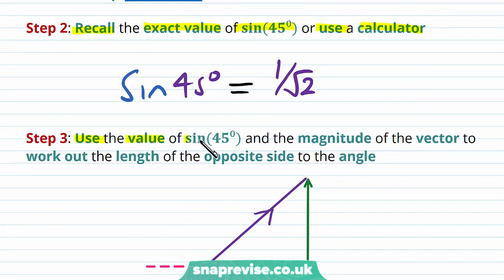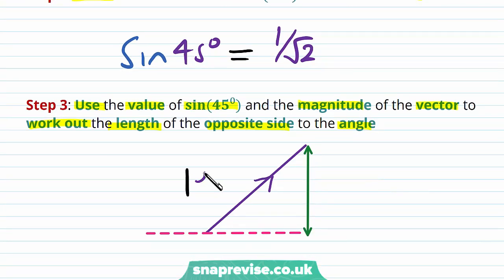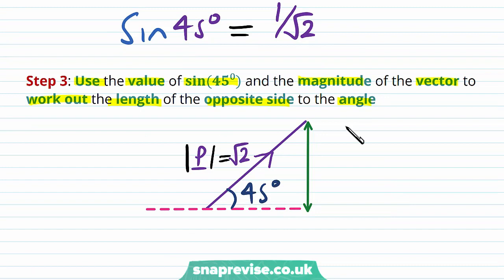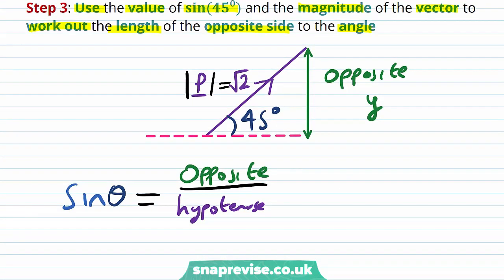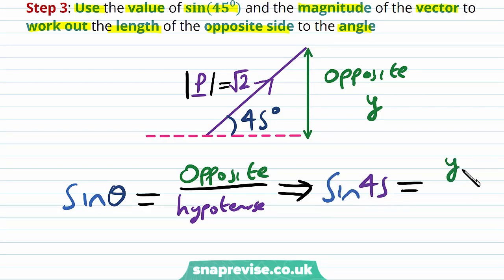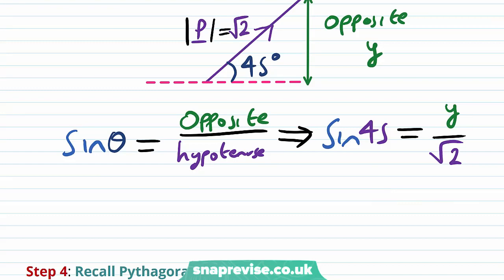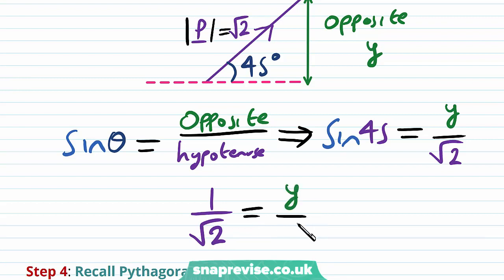We use the value of sin 45 and the magnitude to work out the length of the opposite side. The magnitude of p is √2. Since the angle is 45 degrees, we can write sin(45°) equals y over √2. Since sin(45°) equals 1/√2, we have 1/√2 equals y/√2. Therefore, by comparing, y must be equal to 1.